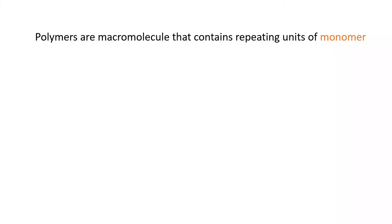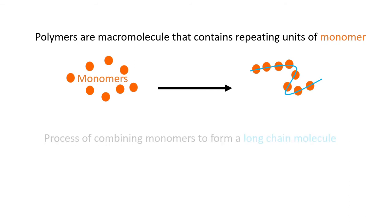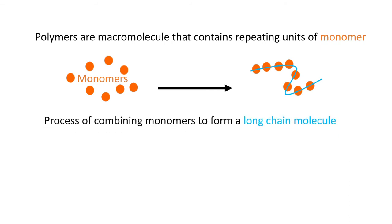In this lesson we will learn about different types of polymers that exist around us and the common types of polymers that we use. Polymers are macromolecules that contain repeating units of monomers. The process of combining these monomers into a long chain molecule is called polymerization.